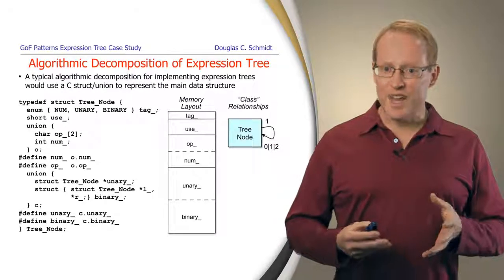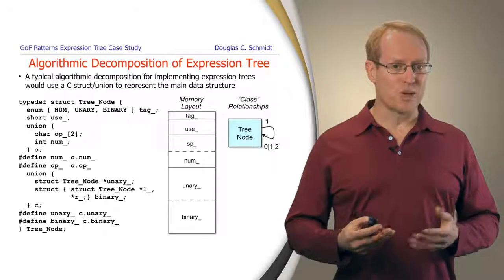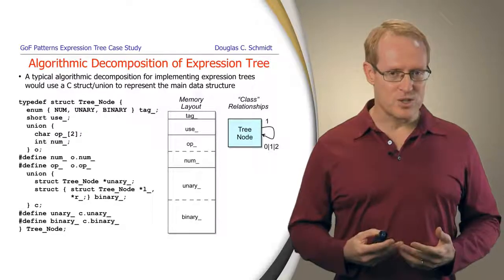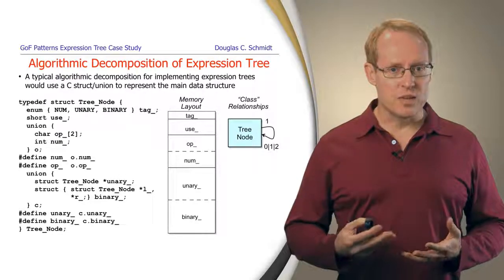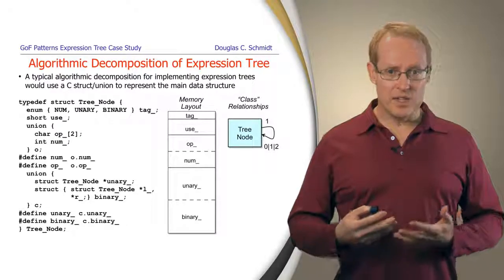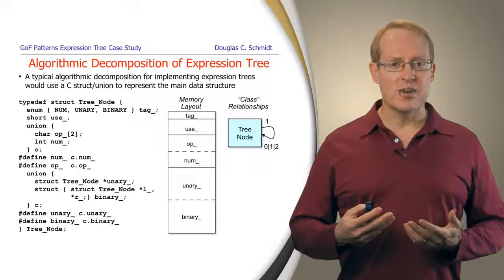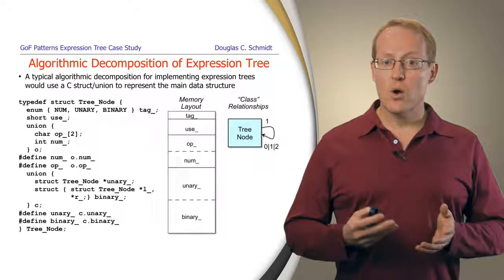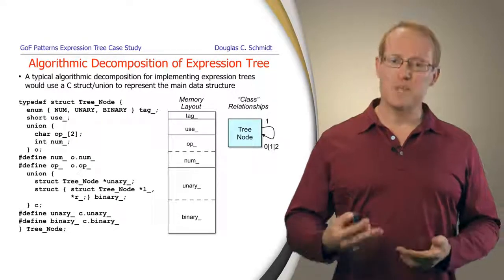Here's a class structure diagram, using the word class a little loosely because this is really just a struct, where we illustrate the relationship between a tree node and its children. So a tree node can either have zero, one, or two children, which themselves are tree nodes.